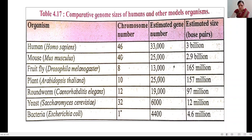The second organism is the mouse, with 40 chromosomes, an estimated gene number of 25,000, and approximately 2.9 billion base pairs. The third organism is the fruit fly, Drosophila melanogaster, with 8 chromosomes, an estimated gene number of 13,000, and approximately 116 million base pairs.